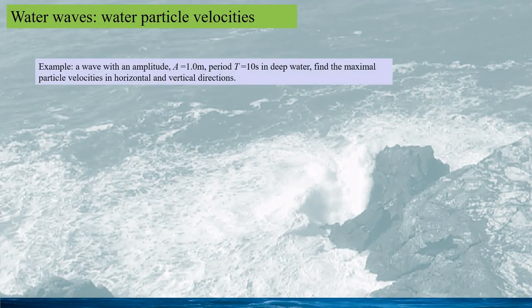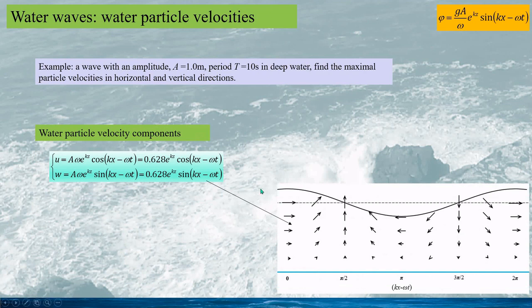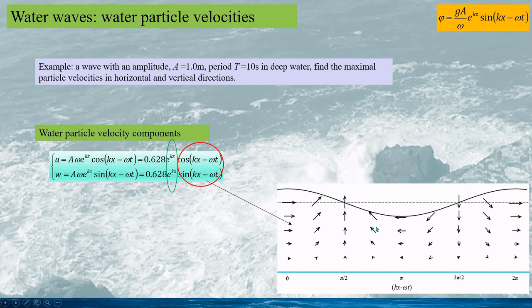In this slide, we consider a wave of amplitude 1 meter and a period of 10 seconds in deep water. We can show the flow patterns and the maximum horizontal and vertical velocities. Based on the wave velocity potential function, the horizontal and the vertical velocity components are calculated, and the drawing is given. From the drawing, we can see the water particle velocities change according to the wave phase — for different phases, the velocity directions are different, and the water particle velocities reduce with the increase of water depth.